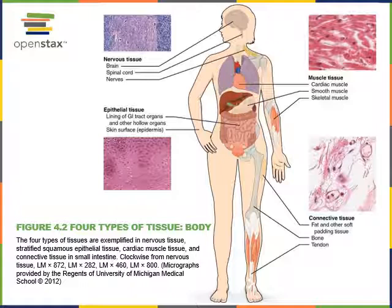Epithelial tissues also form glands — for example, the sweat glands, salivary glands, and endocrine glands that produce hormones as signals through the body. Glands produce secretions. Exocrine glands, like sweat glands, produce secretions that exit the body. Endocrine glands produce hormones that travel through the blood to regulate other organs throughout the body.